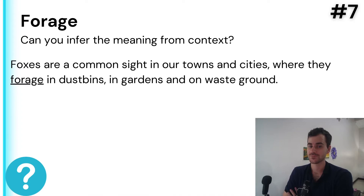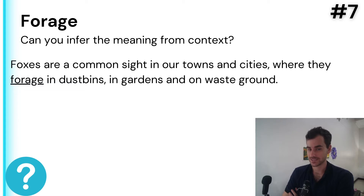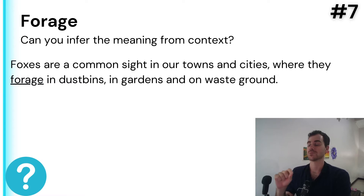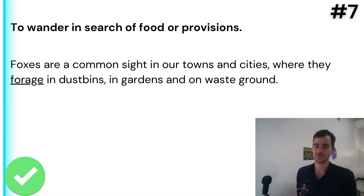Number seven: 'forage.' 'Foxes are a common sight in our towns and cities where they forage in dustbins, in gardens, and on waste grounds.' We can see that this is a verb — foxes, they forage. What do foxes do? Basically, foxes just search for food. So that's what 'forage' means: to wander in search of food. Foxes are foraging in gardens.